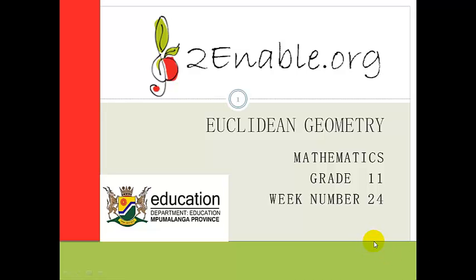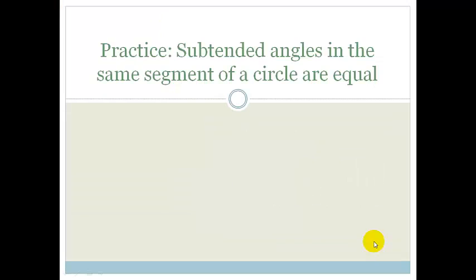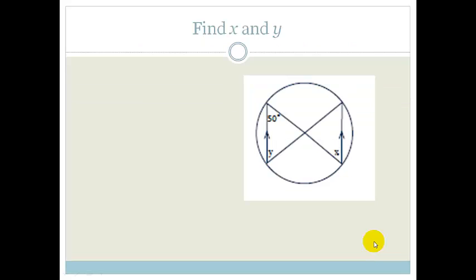Good day, Great Limits. Welcome to this last lesson in week 24. In this lesson, we're going to be practicing all our theorems, but specifically the theorem that the angles subtended by the same segment or arc in a circle are equal. So let's get started.